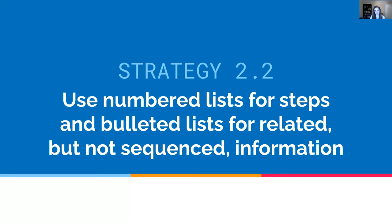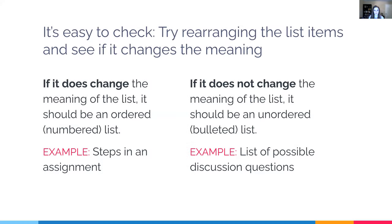When to use numbers versus bullets: use numbered lists for steps, and bulleted lists for related but not sequenced information. Numbered lists imply a specific sequence. To check if your information is sequenced, try rearranging the list in your head — if it changes the meaning, use a numbered list, like steps in an assignment that must be followed in order. If rearranging doesn't change the meaning, use a bulleted list, like a set of discussion questions students can choose from.